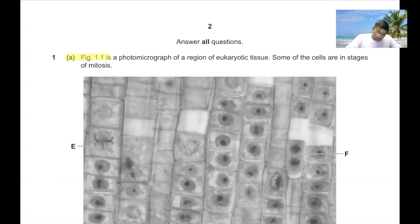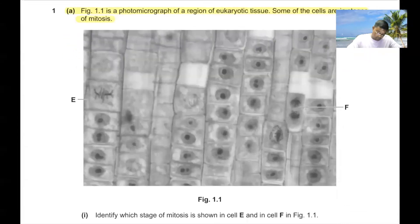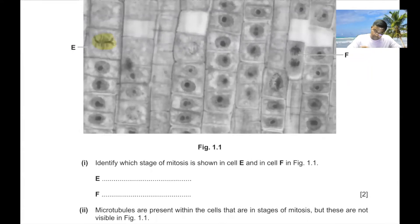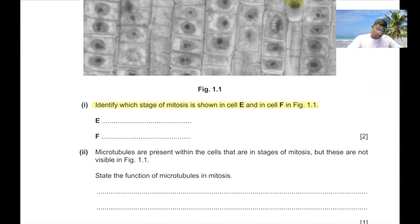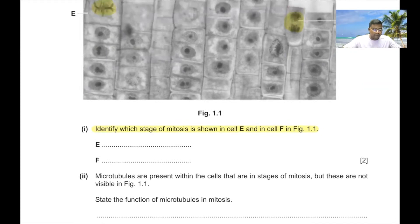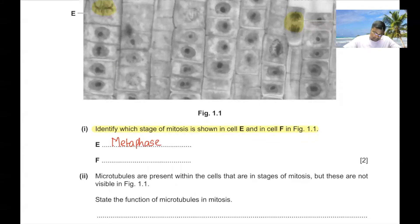Question 1A. Figure 1.1 is a photomicrograph of a region of a eukaryotic tissue. Some of the cells are in stages of mitosis. We can see metaphase at E and anaphase at F. Identify which stages of mitosis are shown in cell E and cell F: E is at metaphase and F is at anaphase.